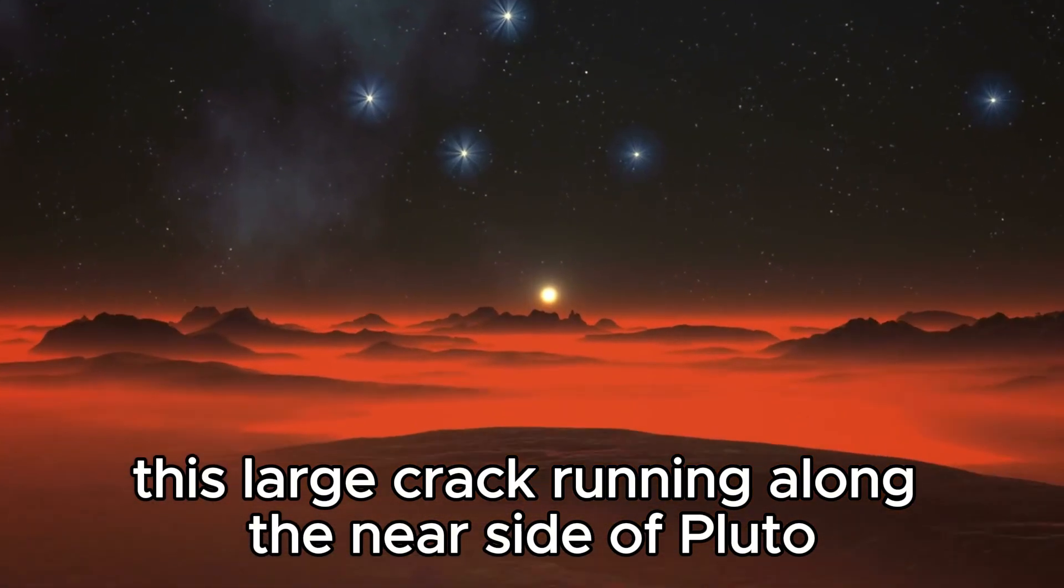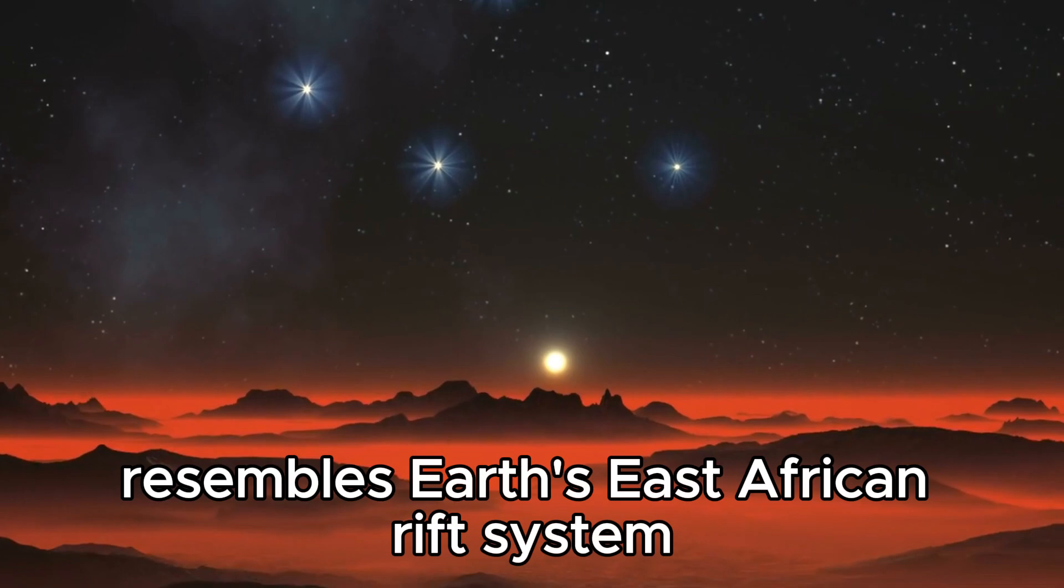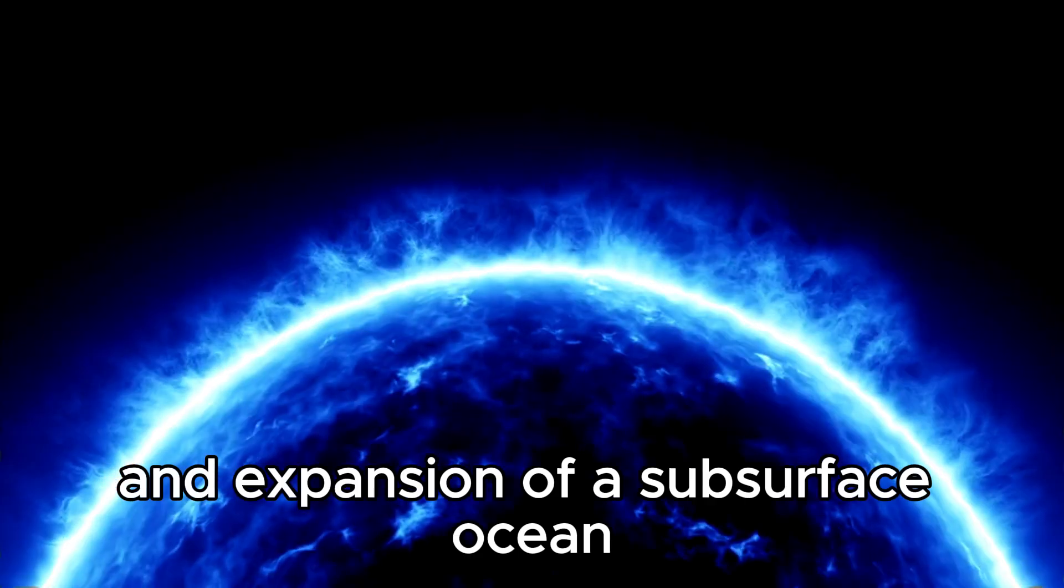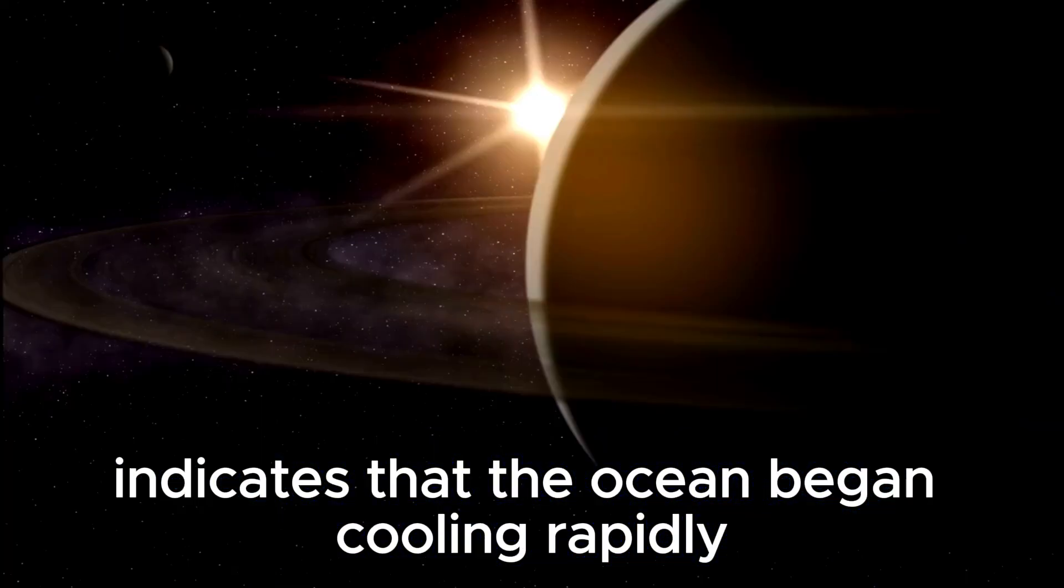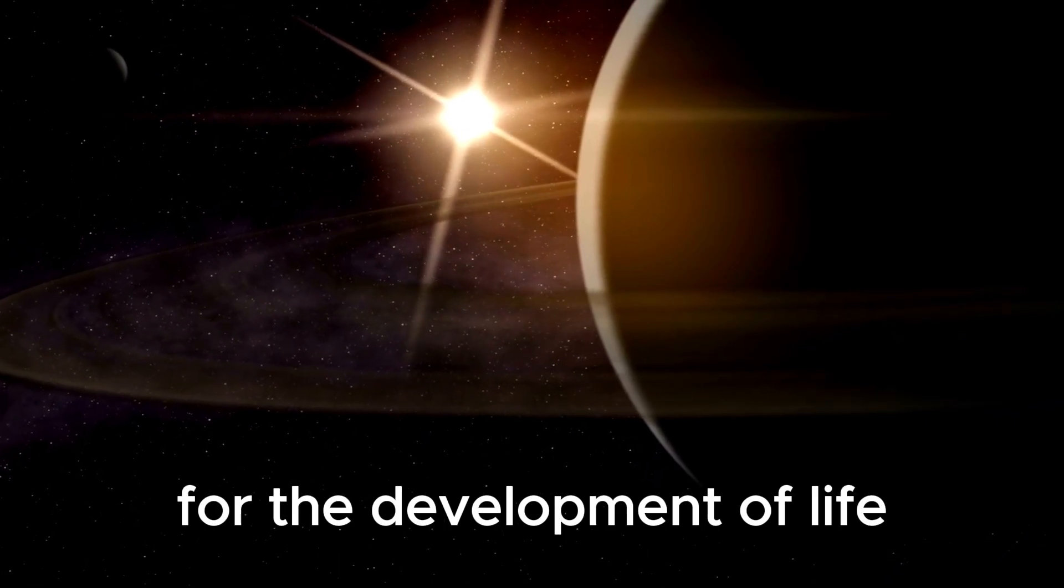This large crack running along the near side of Pluto resembles Earth's East African rift system, likely resulting from the freezing and expansion of a subsurface ocean. The age of this crack indicates that the ocean began cooling rapidly after reaching the surface, possibly creating conditions favorable for the development of life.